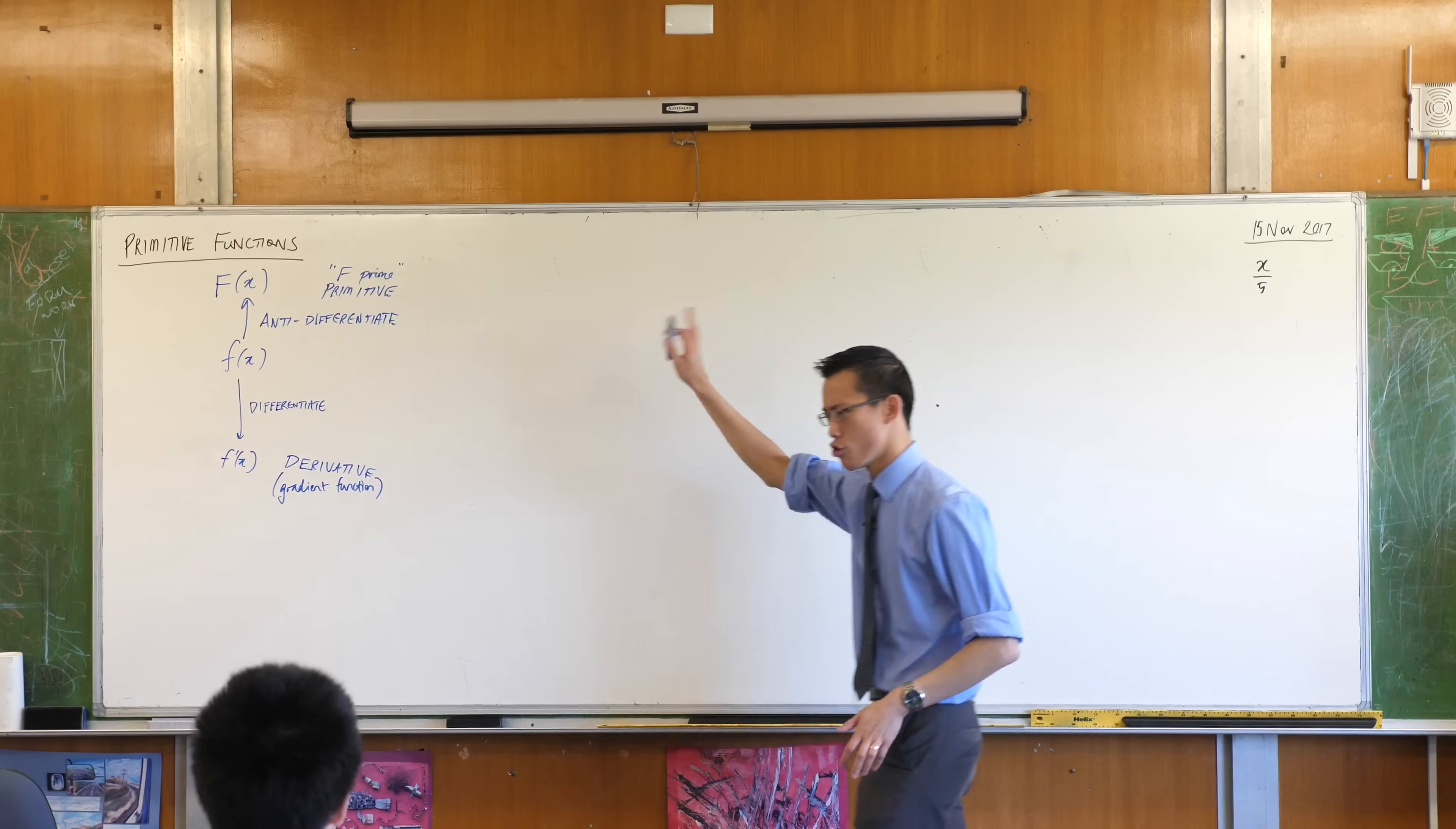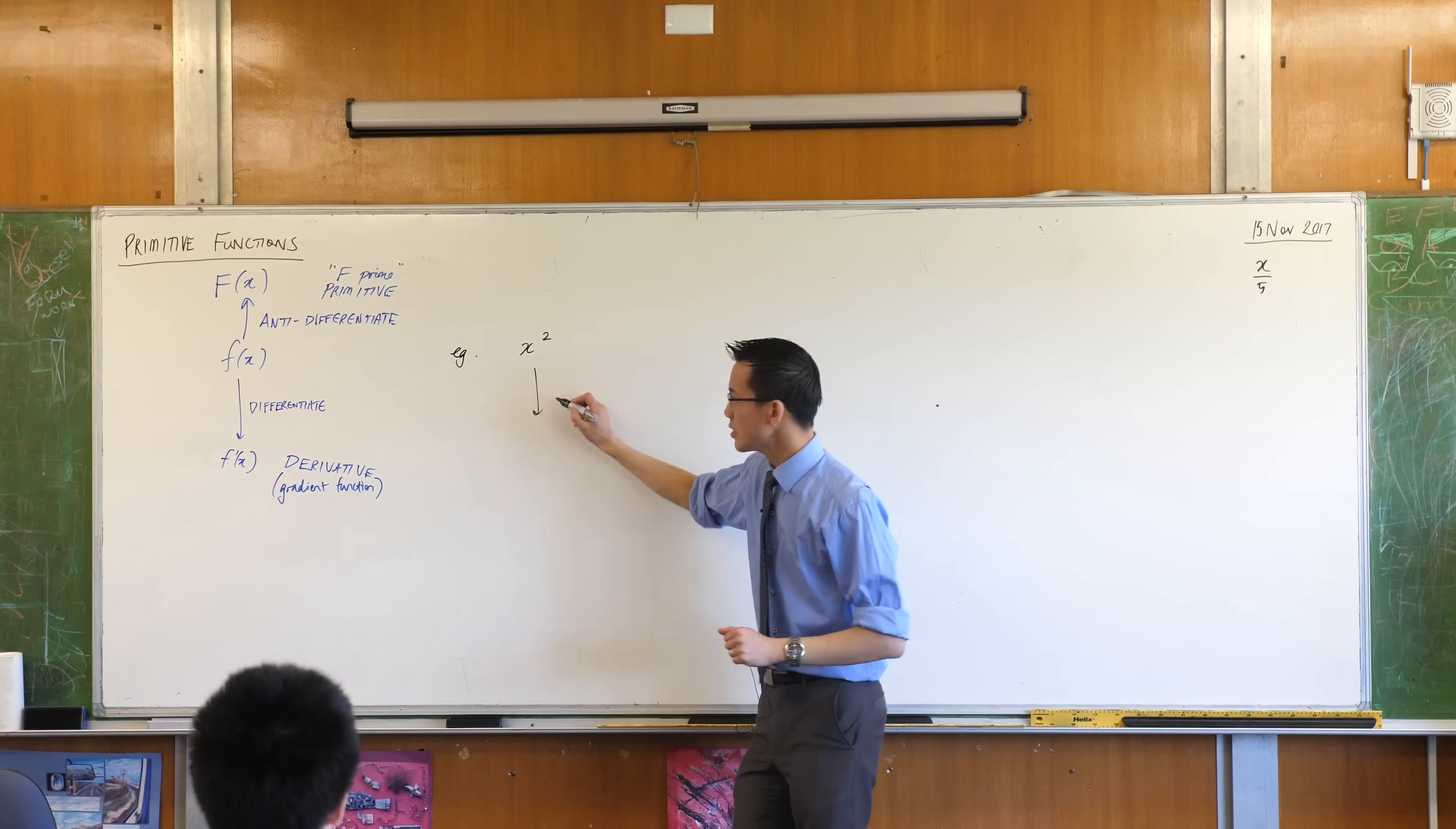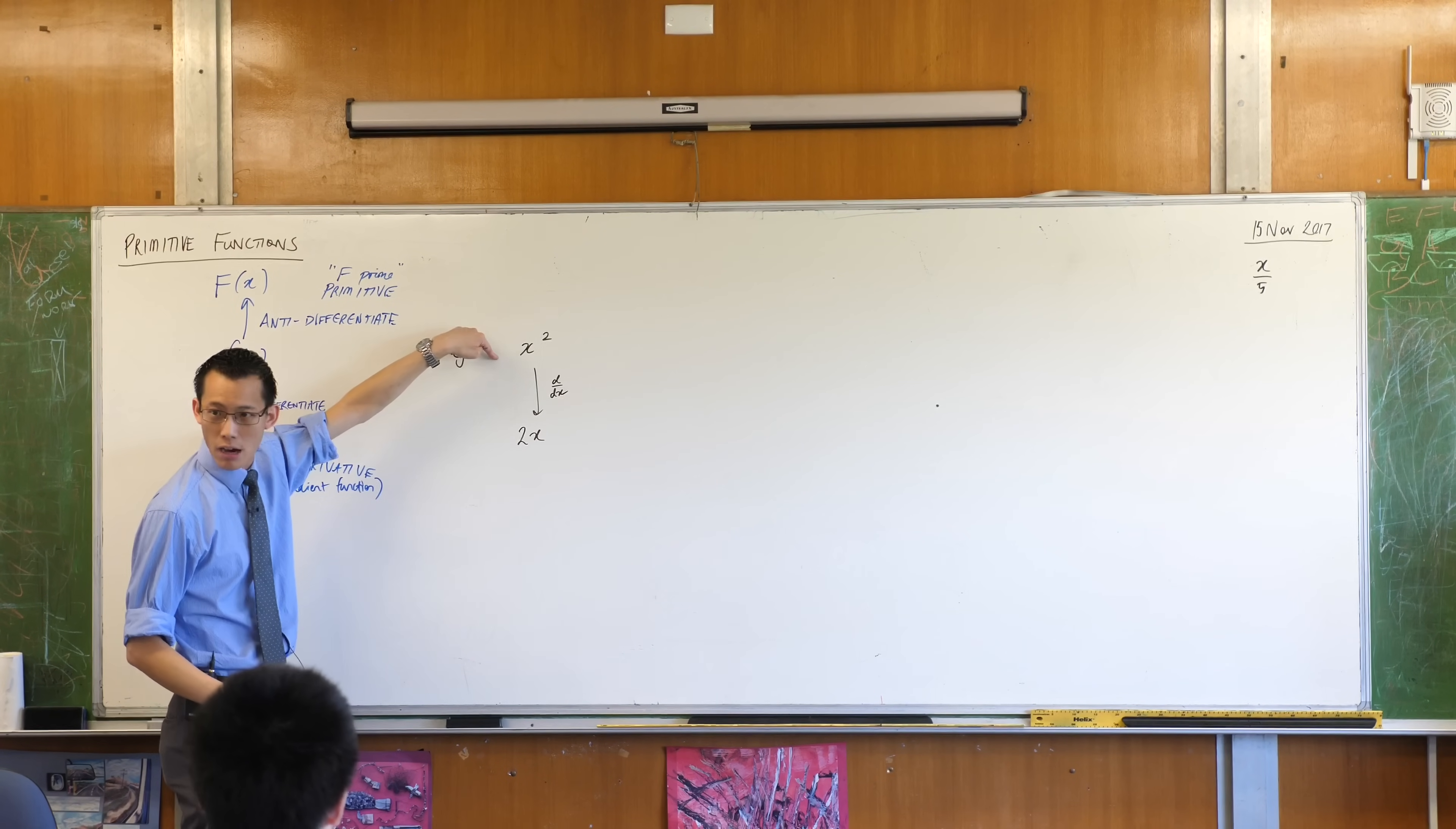Anti-differentiation is what it's called. We'll come to the other names that that process might get to when it's the right time. Now, here's the weird thing. This is all abstract. We want some actual examples of what's going on. In parallel to this, let's just come up with an example, a simple one, like say x squared. We know what happens when we differentiate. If we differentiate this...